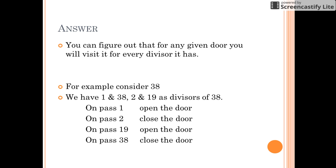The first thing to figure out is how many times you would visit any door. We can figure out that the number of times you visit any given door will be equal to the number of divisors it has. For example, if we consider door number 38, we find the number of divisors of 38.